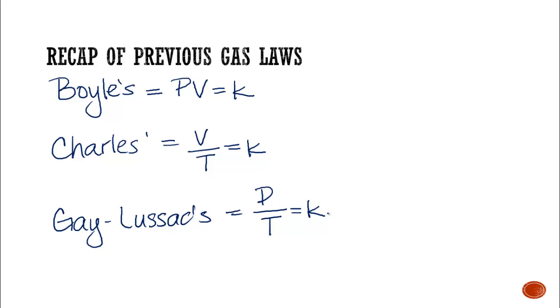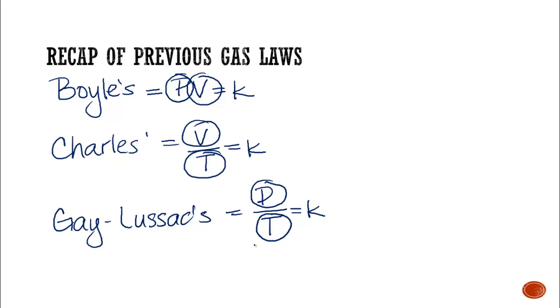So what if we try to combine them? We see a P here and a P here, a V here and a V here, and both of these have a temperature. So we've got V over T and P over T — T is probably the same T. So I'm going to put pressure back on top, and then multiply pressure and volume. I have combined these into one equation, and that equation is known as, go figure, the combined gas law.